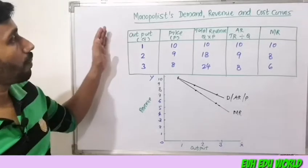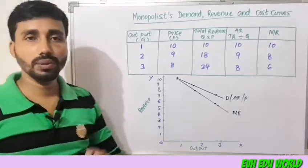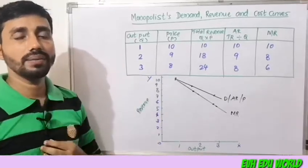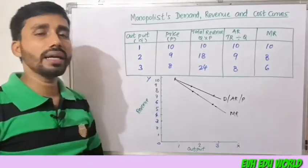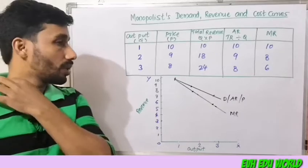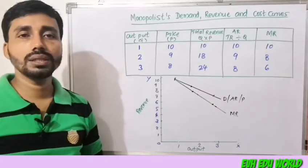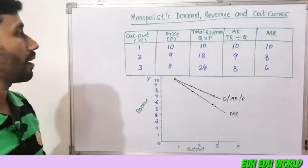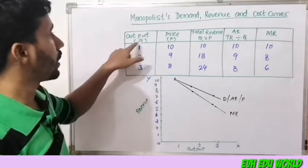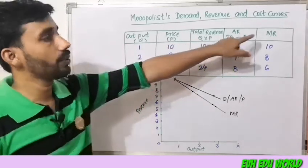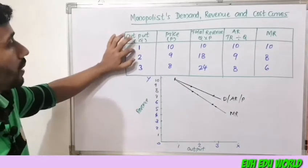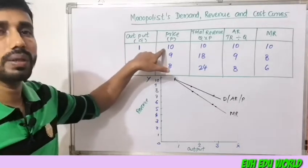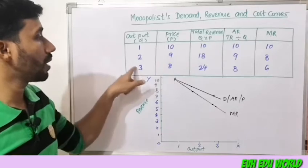Next is the monopolist's demand, revenue, and cost curves. The output levels are 1, 2, and 3, with corresponding prices of 10, 9, and 8 respectively. The demand curve slopes downward.